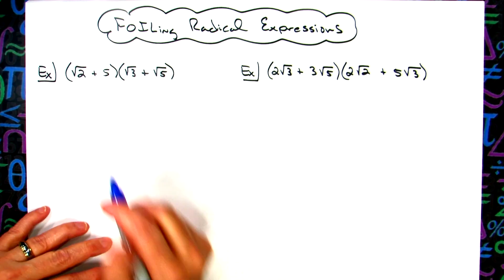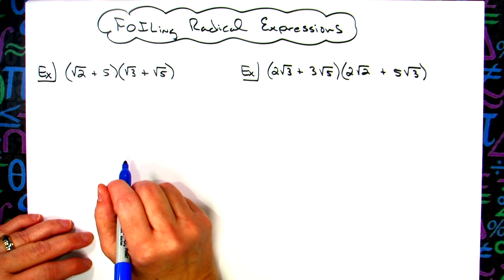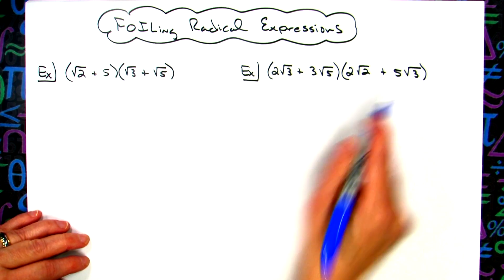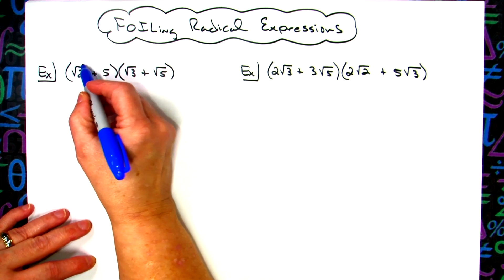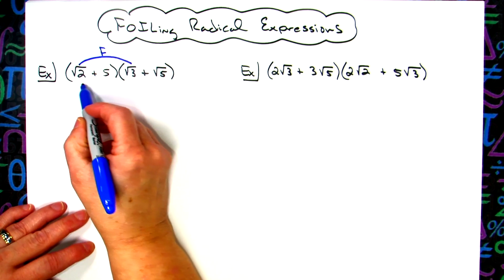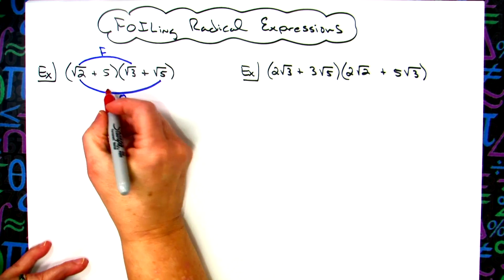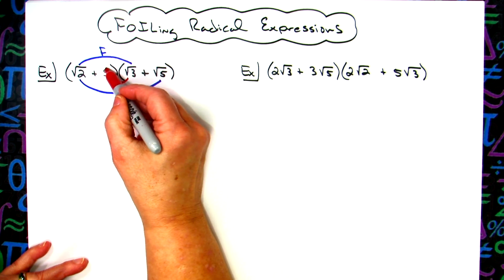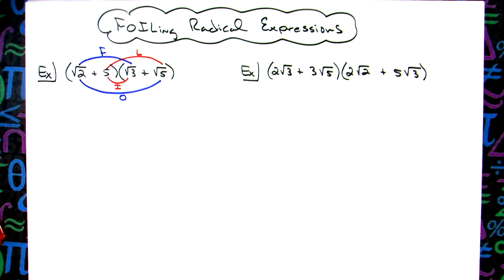In this video we're going to take a look at two examples of foiling some radical expressions. Foiling comes from multiplying binomials, so this time we do have a couple of binomials that also include radical expressions. Just to review: FOIL — F is multiplying the first terms, O is multiplying the outside terms, I is the inside terms, and L is the last terms in each of the individual binomials.